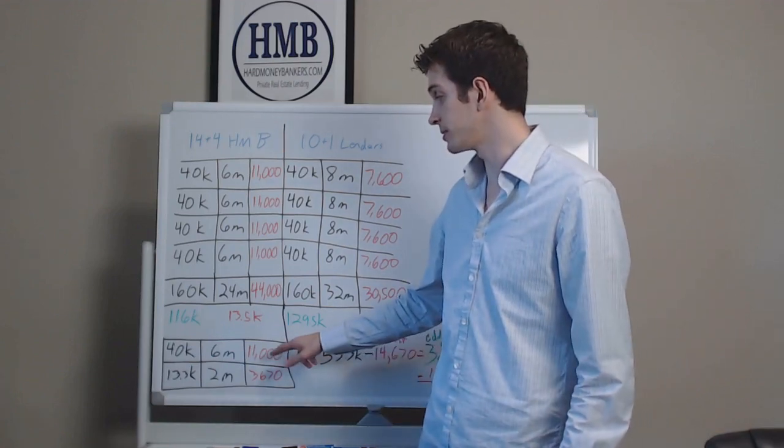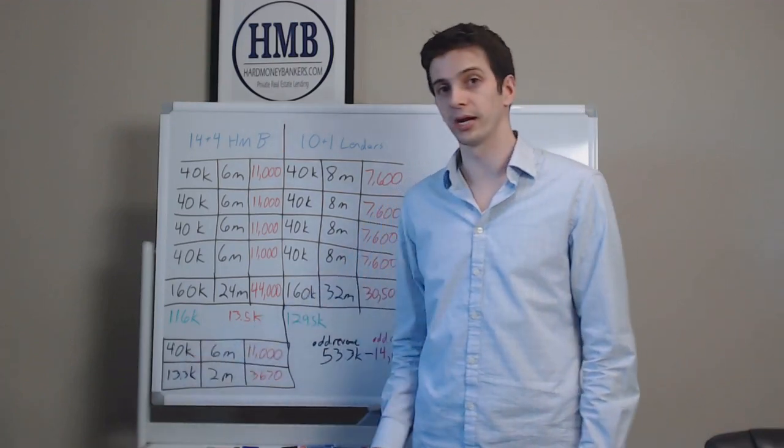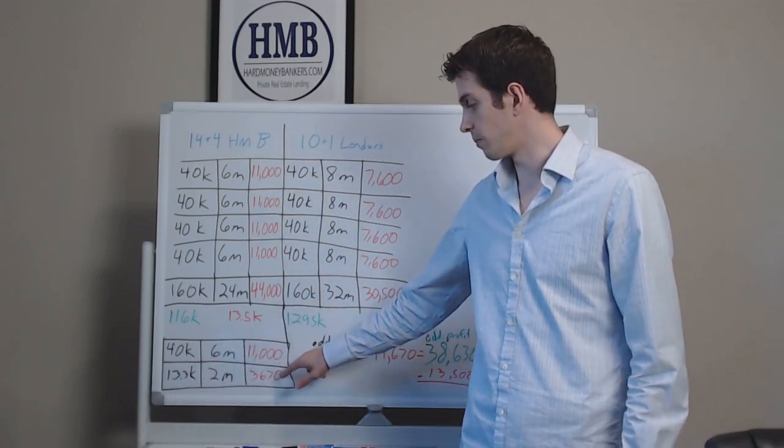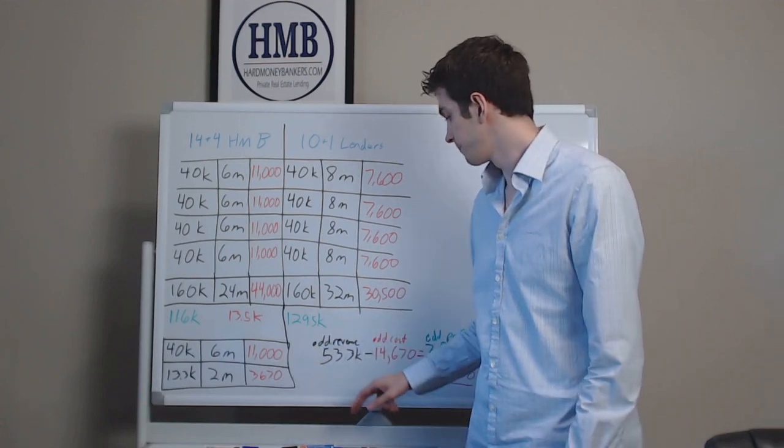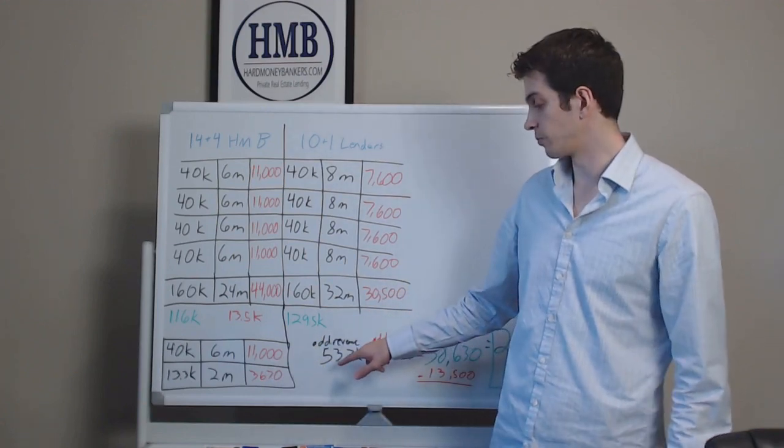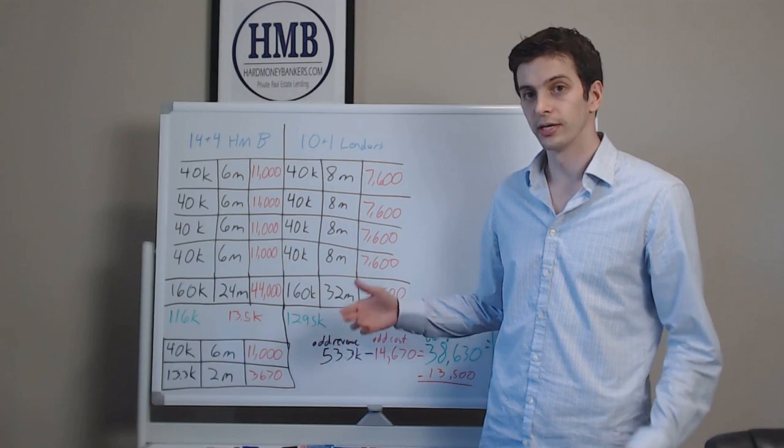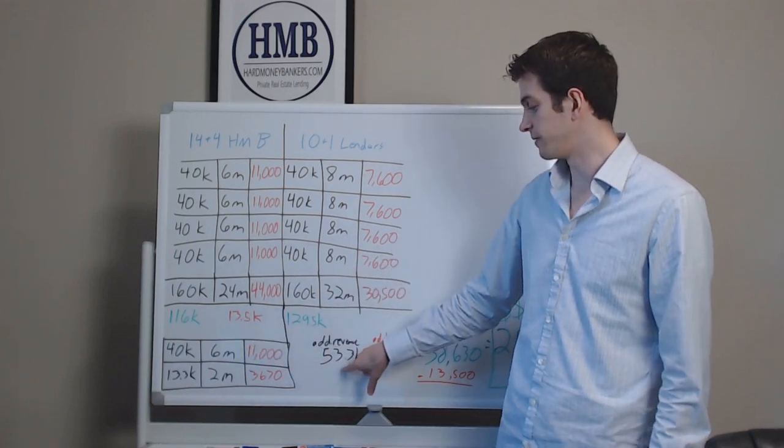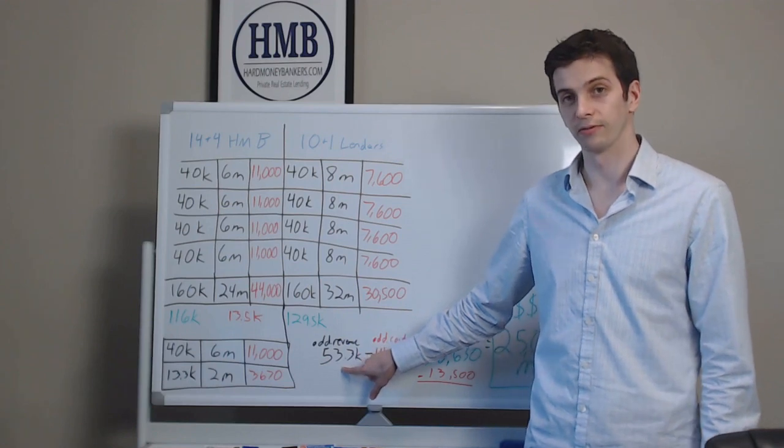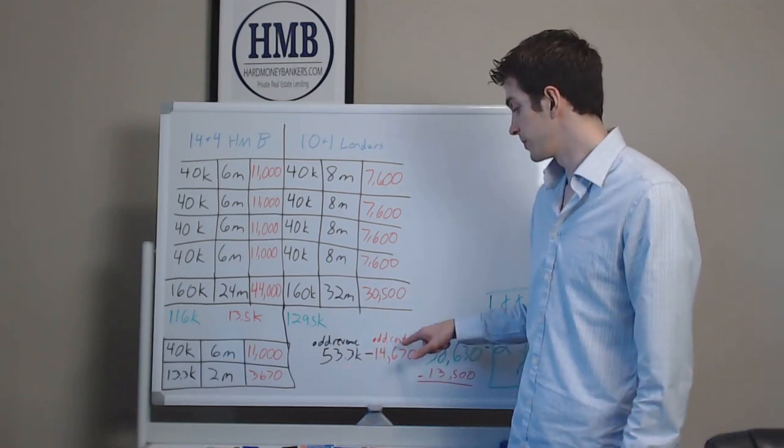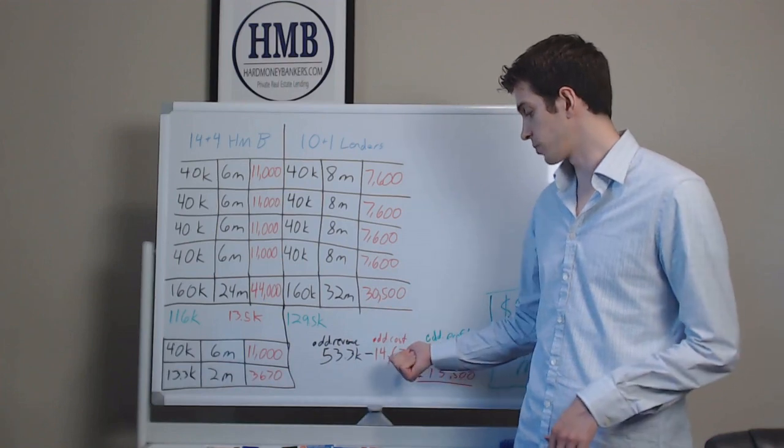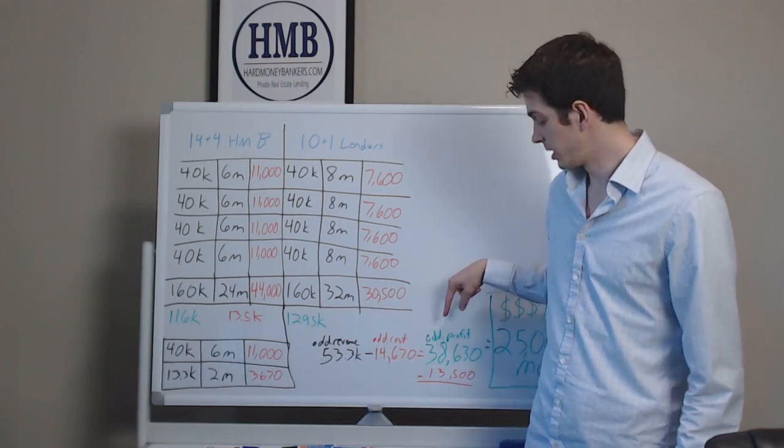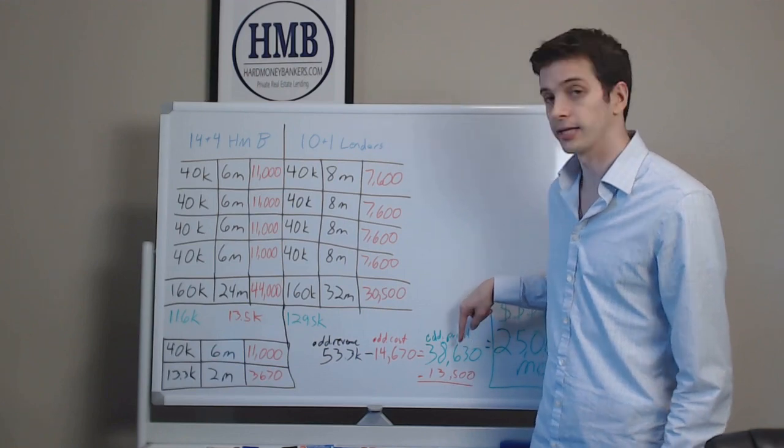So what that means, put in another $40,000 in your pocket, put in another $13,000 in your pocket, take away the hard money fees. And really what you're saying is with hard money bankers, I can do five flips and a little bit more, which equates to $53,000 in revenue for you as a borrower. The additional cost of doing that with our money is $14,000. So your additional profit per year is a little over $38,000.